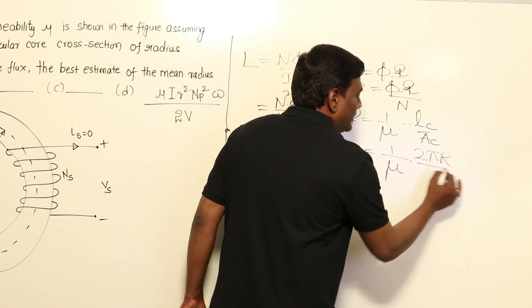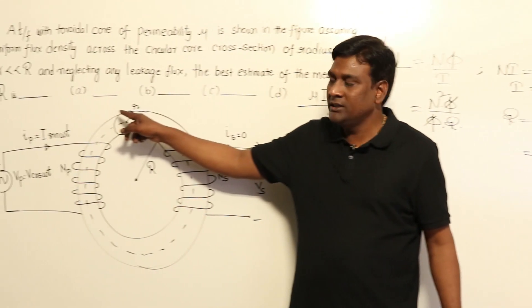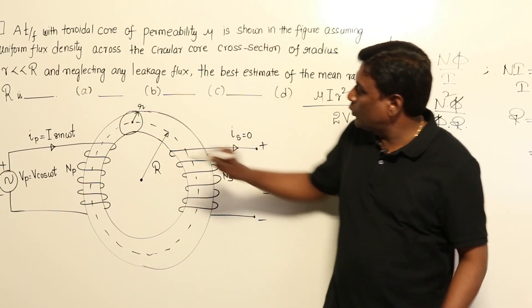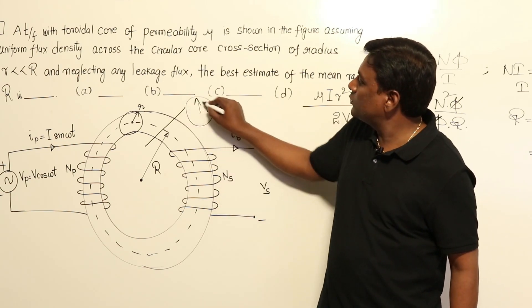So reluctance is 1/μ times length of flux path 2πR_m divided by area. Now this is a circular cross-section, so the area of cross-section of the core is a circle with radius r.